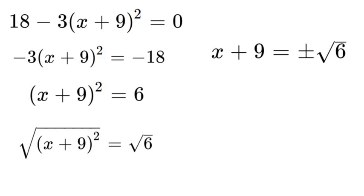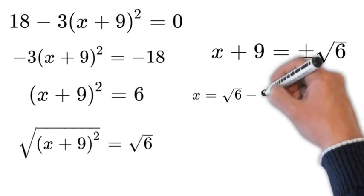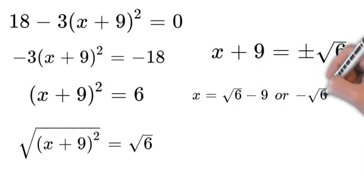So if we subtracted 9 we would end up with two answers. We would have x is equal to positive square root of 6 minus 9 or negative square root of 6 minus 9. And those are the two answers for this equation.